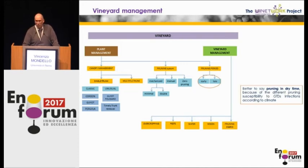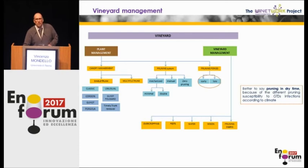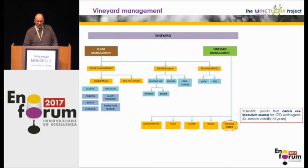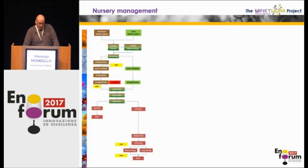With reference to early or late pruning, the scientific committee remarked that, depending on the area, it is better to prune in dry periods due to the risk of spore infection — though much depends on the area and late pruning may be better in some cases. Regarding pruning debris, in the case of Botryosphaeriaceae species that cause dieback, spores remain viable for up to three years on pruning debris. One recommendation from the scientific board is therefore to remove pruning debris from the vineyard and use it for composting, as the temperatures reached during composting will neutralize the pathogens present.